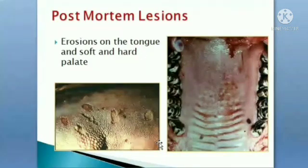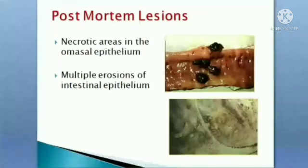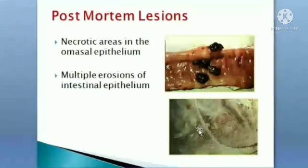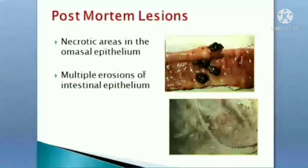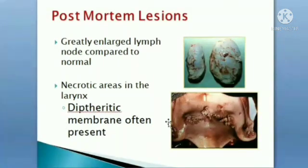On post-mortem, erosions on the tongue and soft palate are noticed. Necrotic areas in the omasal epithelium and multiple erosions are found. Radially enlarged lymph nodes compared to normal are present. Necrotic areas in the larynx form a diphtheritic membrane. The urinary bladder mucosa is hyperemic and edematous. The kidney often has raised white foci on the cortex.